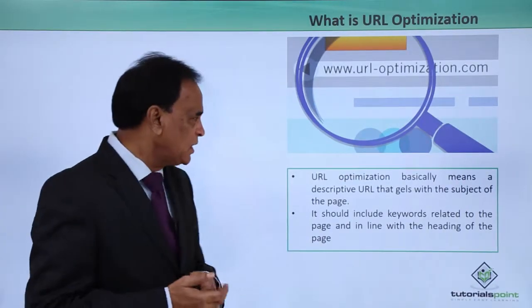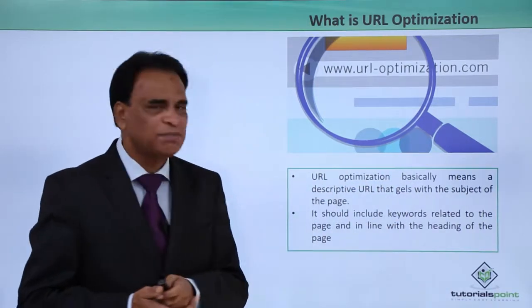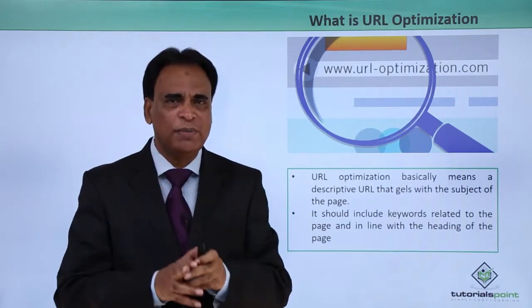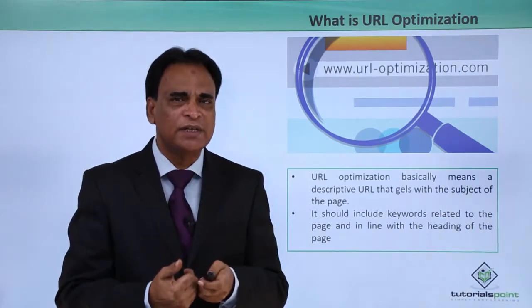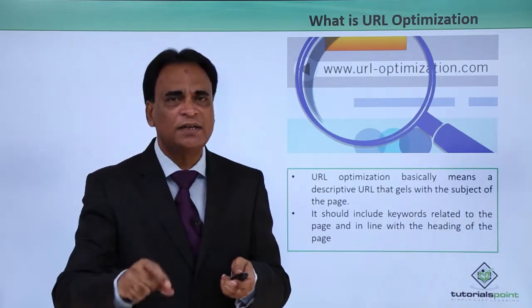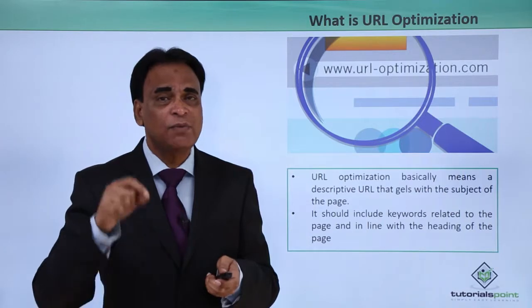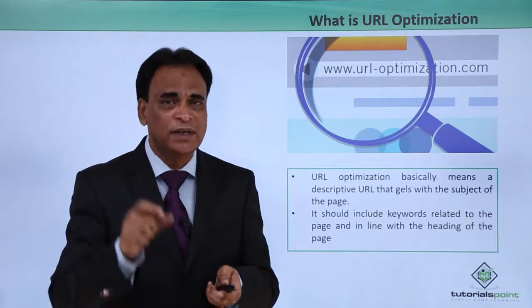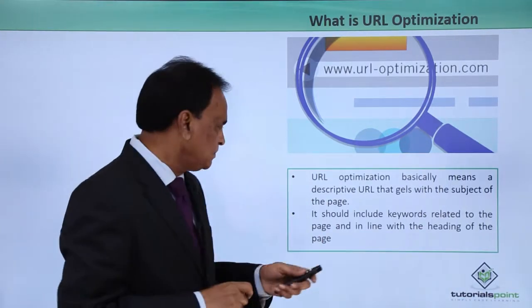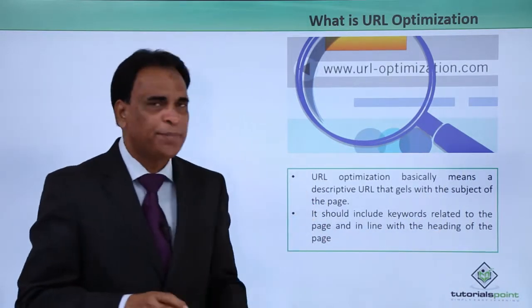URL Optimization basically means a descriptive URL that gels with the subject of the page. Besides the home page, which obviously displays your domain name, if you click and go to an internal page, the URL of that page has to gel with the subject and the content of your page. It has to describe what the page is all about in a short manner, and that is the most important factor in Search Engine Optimization. It should include keywords related to the page and in line with the heading of the page.